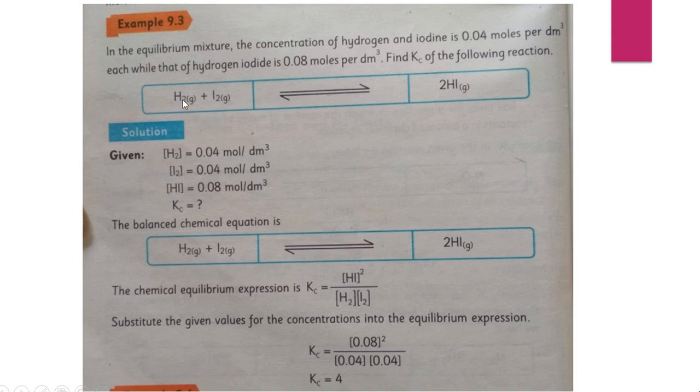First of all, you have to write the balanced chemical equation. H2 plus I2 that will give HI but you have to balance it. So 2 hydrogen here, 2 iodine here. So for that purpose, here must be a 2 to balance the chemical equation on both sides.